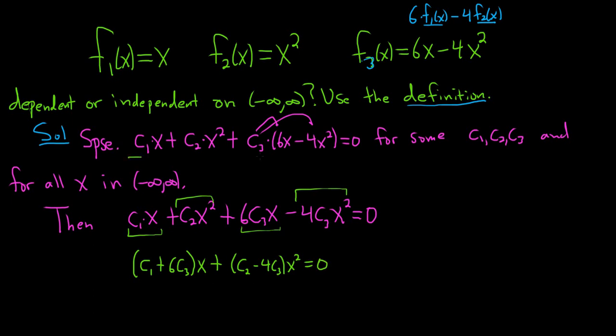So recap. We start off by assuming we have a linear combination of the functions equal to 0 for some c1, c2, c3, and for all x in this interval. We rewrite it by distributing the c's. Then we group together all the like terms. And let me just recap this. I actually didn't even mention it. So if we get that all of the c's are 0 and we have no say in it, the answer is independent.